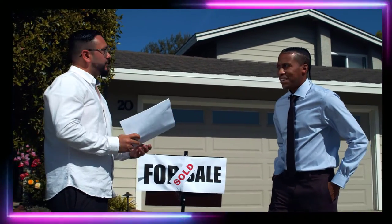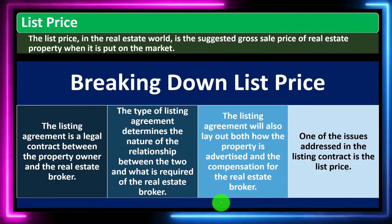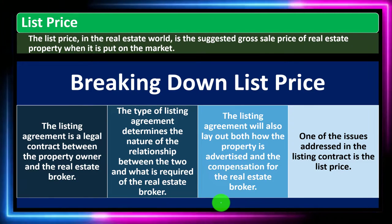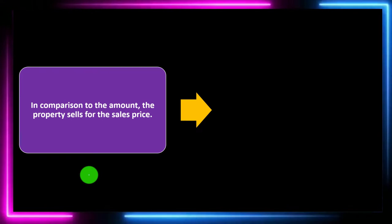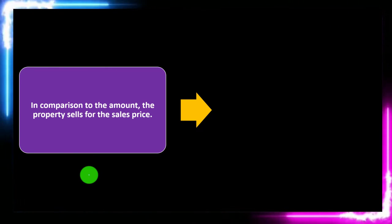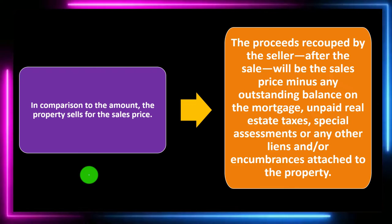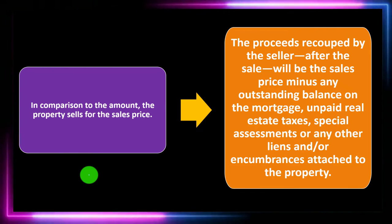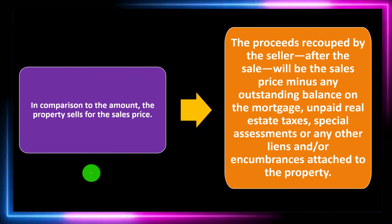One of the issues addressed in the listing contract is the list price — what you're listing the property for as you market it. In comparison, there is the sales price, the amount the property actually sells for. The sales price may be different from the list price; the list price is what you put it out there for, but that's not necessarily what the closing deal will be at the end of the day.